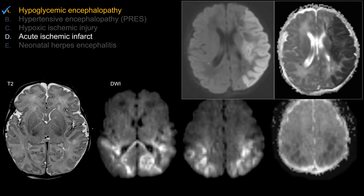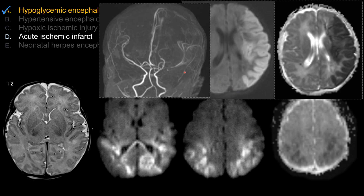For acute ischemic infarction, the territory is distinct to an arterial territory — in this case a large MCA distribution. Compared to hypoglycemic encephalopathy, the involvement here tends to involve two territories, such as posterior MCA as well as PCA. So that is different. It's also a bilateral process, which is unusual for an acute ischemic infarction due to occlusion of a vessel. In this case, there's occlusion of the MCA leading to a large territorial infarction, sparing the PCA as well as ACA territory.